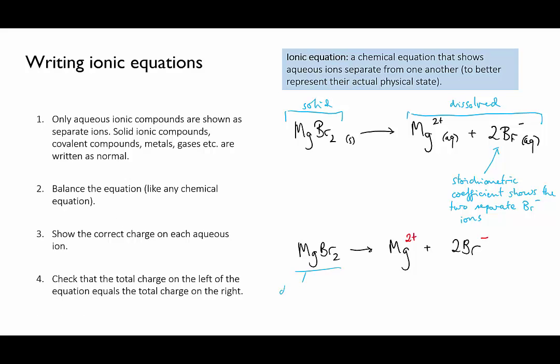A little bit of a side note here, when we write the complete formula of an ionic compound, when it's a solid for instance, we don't explicitly write the charges on the separate ions. So MgBr2, there's no charges shown there. That's because the charges on the cations and the anions balance each other out in that compound to make the overall compound neutral.